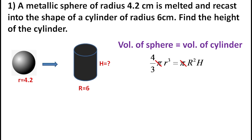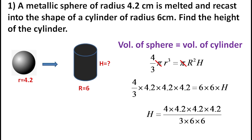Now we substitute values. 4/3 into r (radius of sphere), capital R (radius of cylinder): 4/3 × 4.2 × 4.2 × 4.2 = 6 × 6 × h. Dividing to find h, we simplify to get h = 2.74 cm. The answer is height = 2.74 cm.